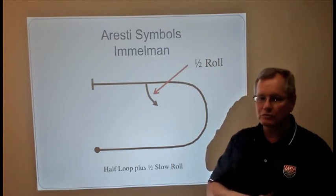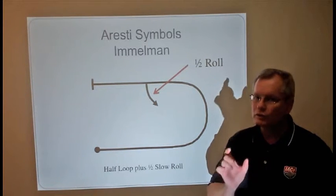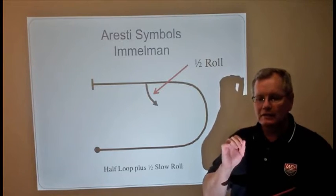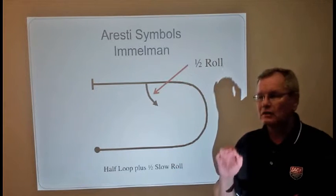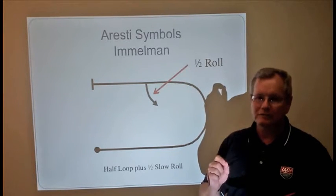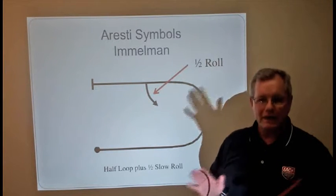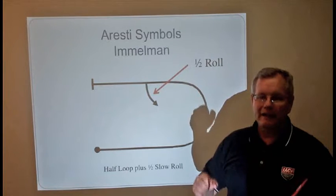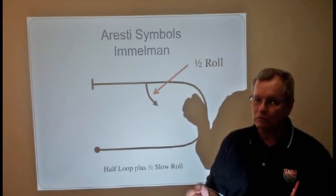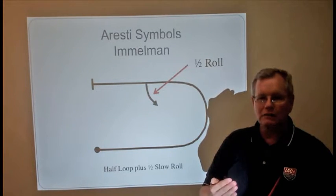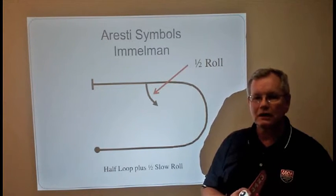Most airplanes have natural stability and they will resist departing controlled flight for a short window of time. Anytime you're in training learning how to do these maneuvers — or even once you're experienced — if the airplane is not doing what you expect, the second it does something unexpected, abandon the maneuver immediately and aggressively center the rudders and aggressively center the stick in both pitch and roll. The natural stability of the airplane will keep it from departing into some sort of a spin event.